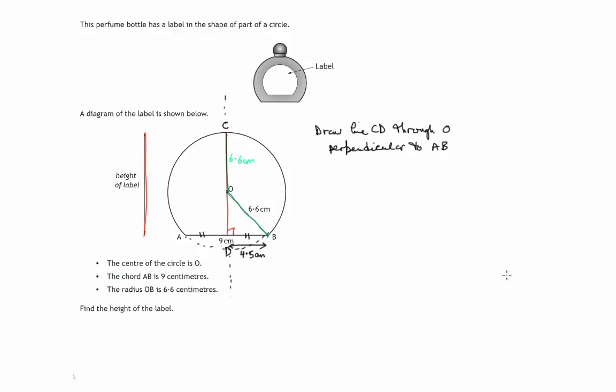So there's various bits and pieces that we've got. OC is equal to 6.6 centimetres. That's a radius. And we've also got DB which we knew was half of AB. That's half of 9, which is 4.5 centimetres.